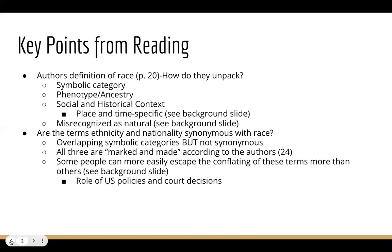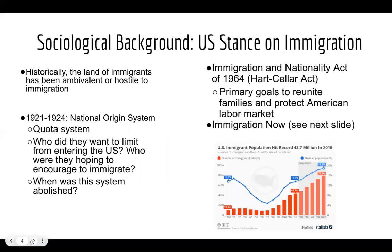A lot of that has to do with the role that United States policies and court decisions have played over time in designating who gets to be considered white, who gets to be allowed into America and permitted to be a citizen legally. The immigration process has played a key role in shaping our racial classifications, as well as how we think of citizenship and nationality in this country.